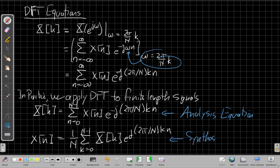x of k e to the plus j 2 pi over n k n. So this is my synthesis equation. And again, very important to remember, I'm now summing over k. This is essentially my frequency index. I'm counting through the frequencies.